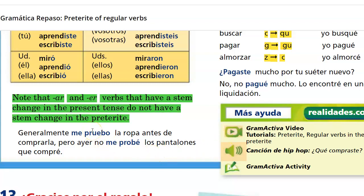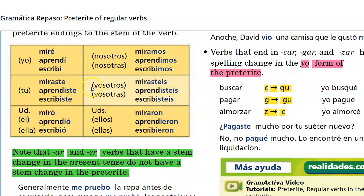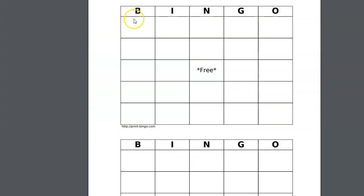Also remember that YO form and ÉL/ELLA/USTED form conjugations carry accents on that final vowel. So all regular conjugations in the YO form and all conjugations in the ÉL/ELLA/USTED form carry accents.